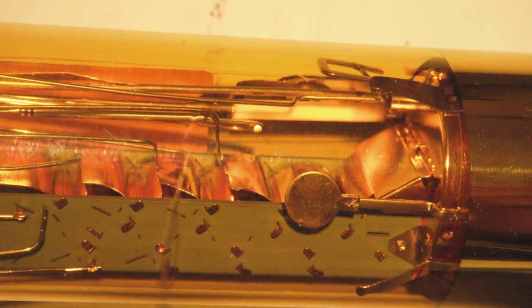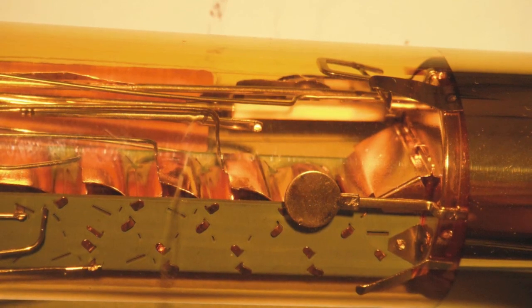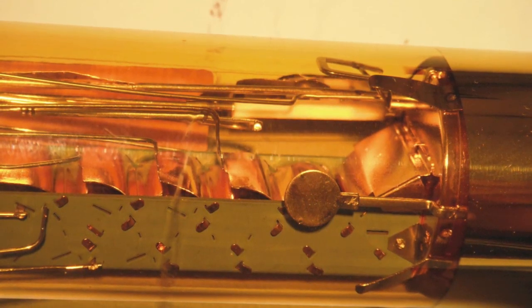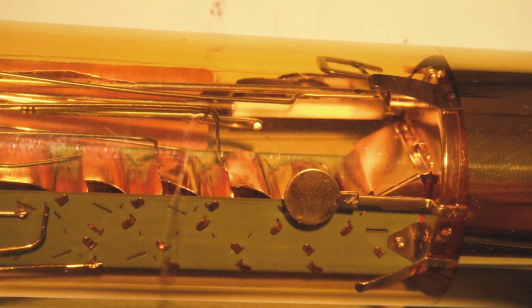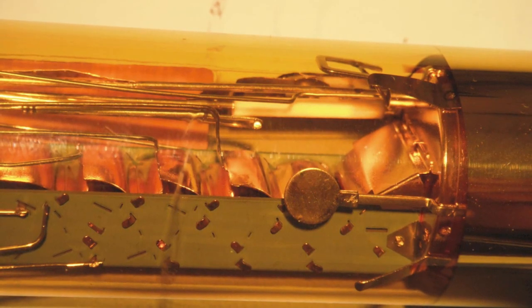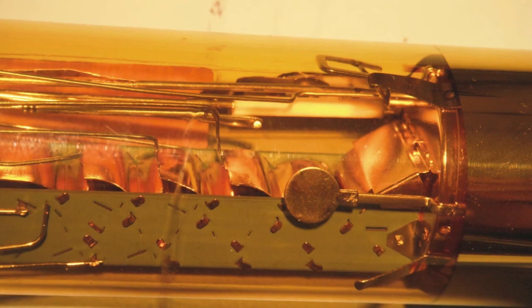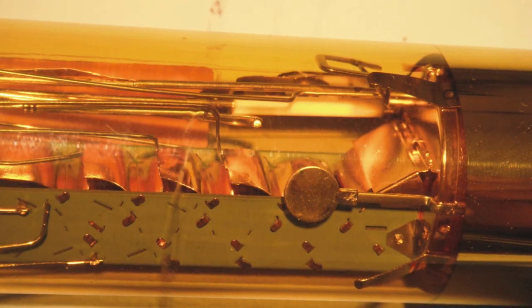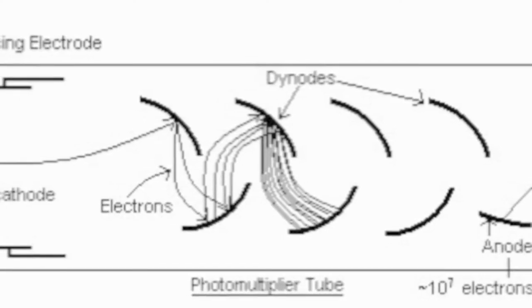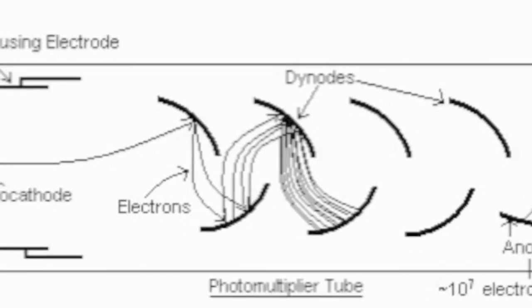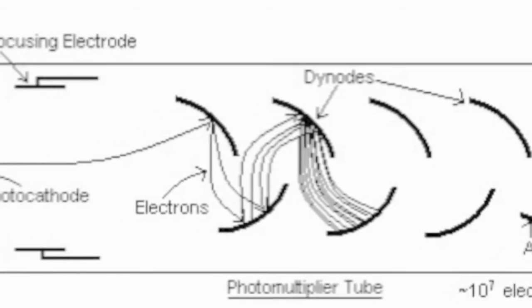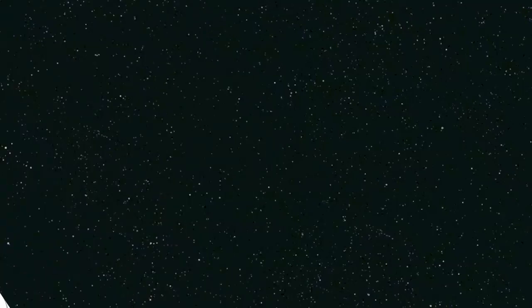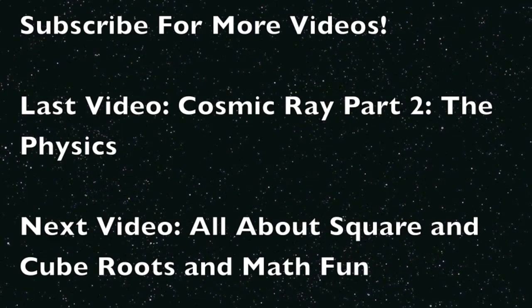So at the very end, after all the dynodes, you'll have this huge amount of electrons because they've been multiplied. You'll have millions of electrons because of your million or so multiplication. And these electrons will hit an anode. I'm sorry if I'm messing up the terms anode and cathode here, sometimes I get confused.